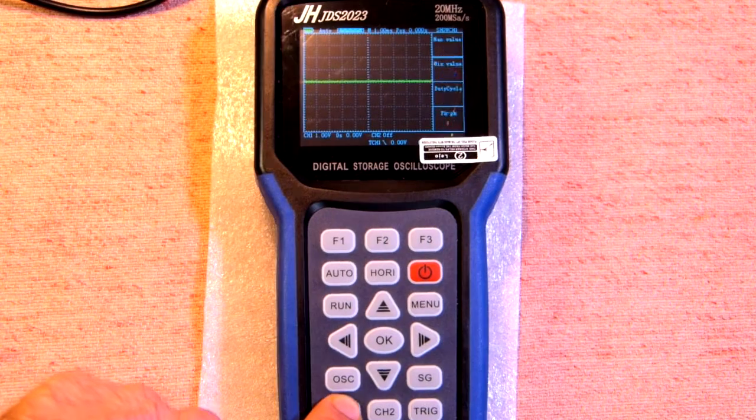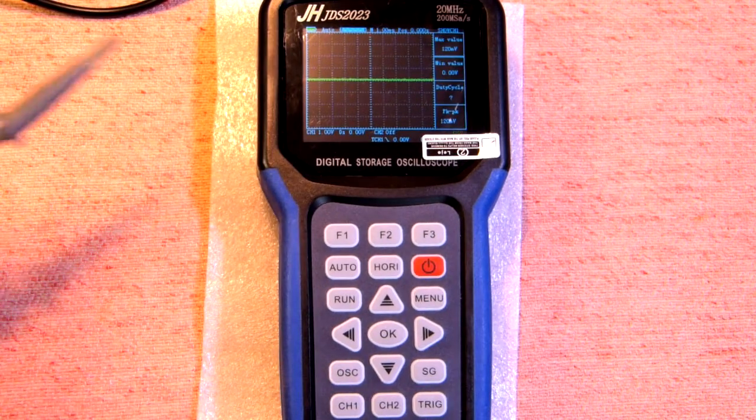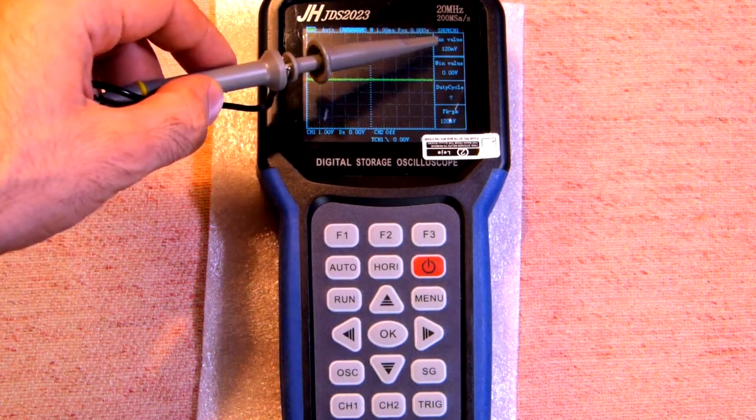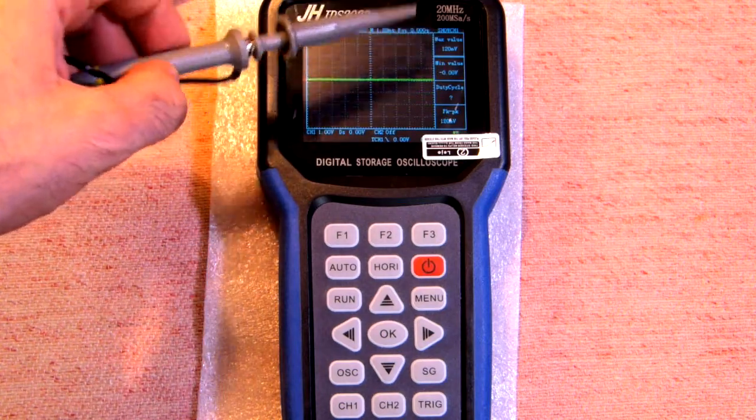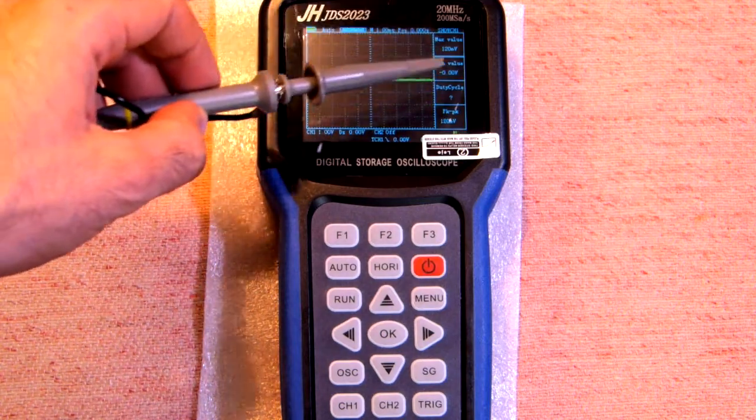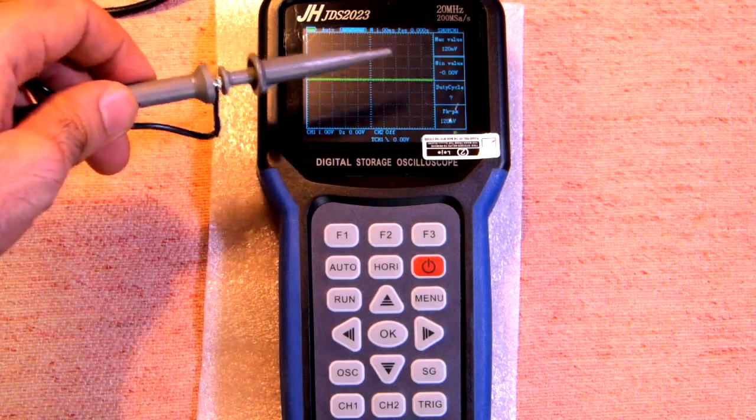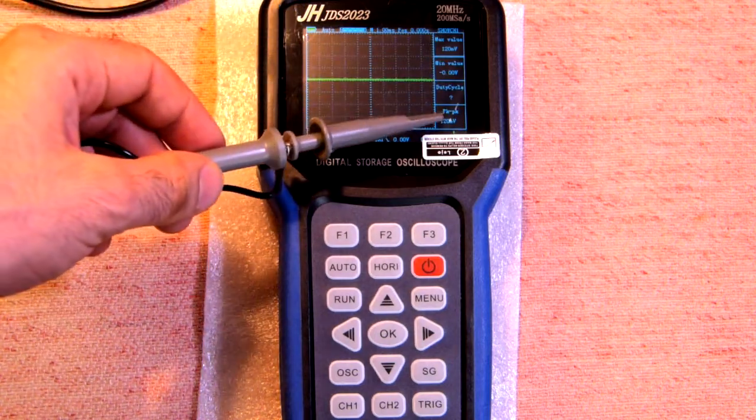The second pressing allows to measure the parameters. So here we have maximum value, minimum value, duty cycle if it's present and peak to peak level.